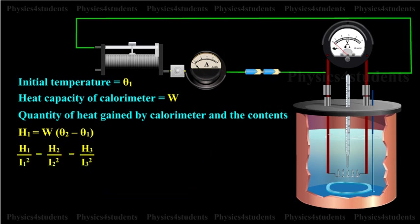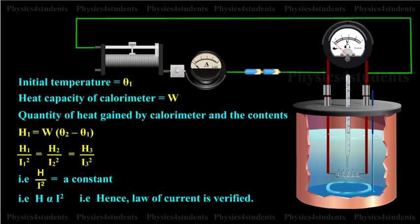It is found that H1 by I1 square equals H2 by I2 square, that is equal to H3 by I3 square, that is H by I square equals a constant. H is proportional to I square, hence the law of current is verified.